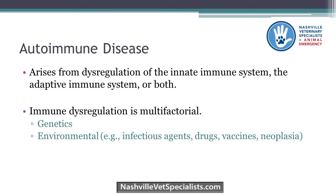We're going to do a quick, hopefully painless review of the immune system and autoimmunity. Autoimmunity arises from dysregulation of the innate immune system, the adaptive immune system, or sometimes both. The important thing to remember is that it is multifactorial — more than one factor is going wrong in the body, and that's why these diseases are so hard to treat.